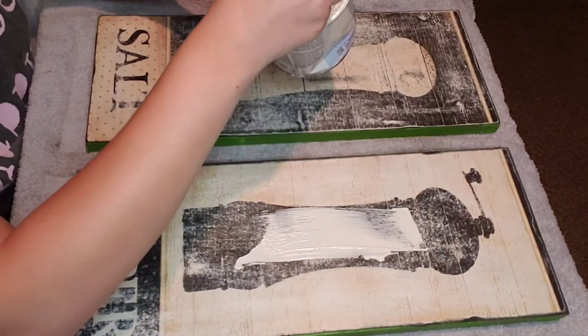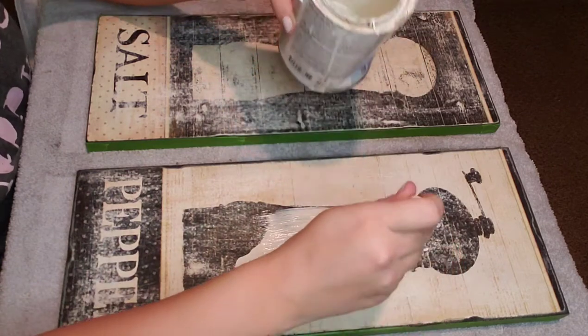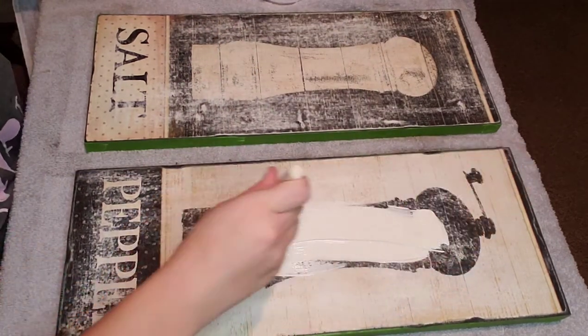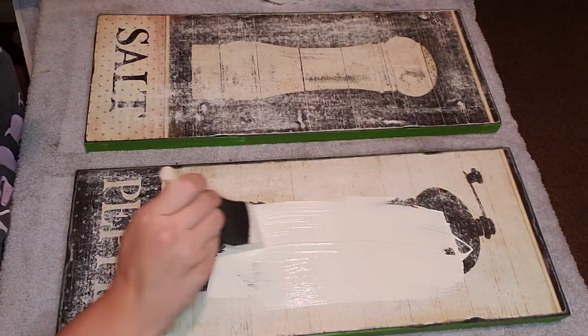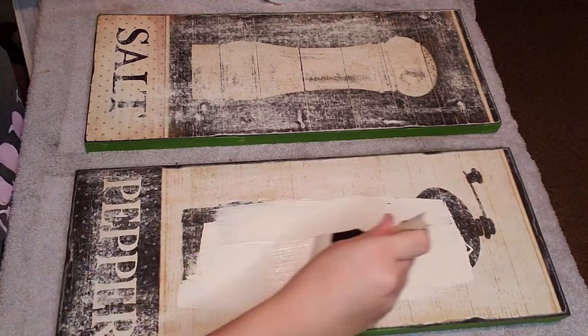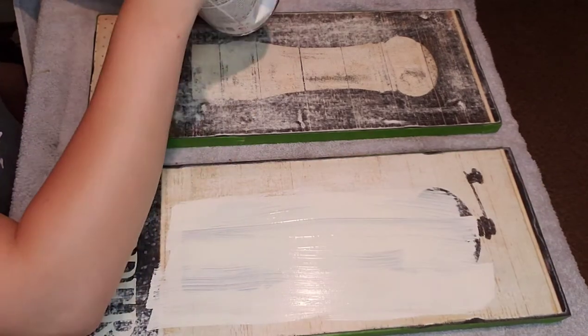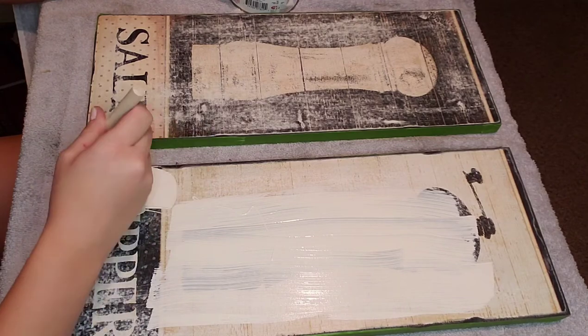Then I went in with chalky finish classic white. This is Krylon that I had mixed at Lowe's just because I had it on hand already, but any white paint would do. This is chalk paint, but I think white acrylic paint would work as well. So I just went and put two coats of this on and made sure they were super dry before I did any of the drawing.